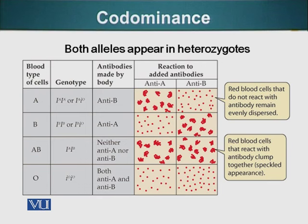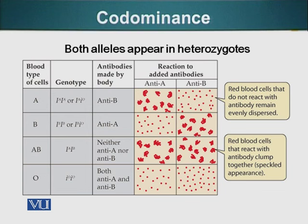Landsteiner took blood from patients with blood group A and added serum — serum is blood without any cells. Adding plasma from blood group B into blood group A results in clumping of the red blood cells. Similarly, if a person with blood group A is exposed to plasma from blood group B, that also causes clumping. This is an example of co-dominance: both A and B genes are expressed simultaneously, making and displaying both A and B elements on the cell surface.